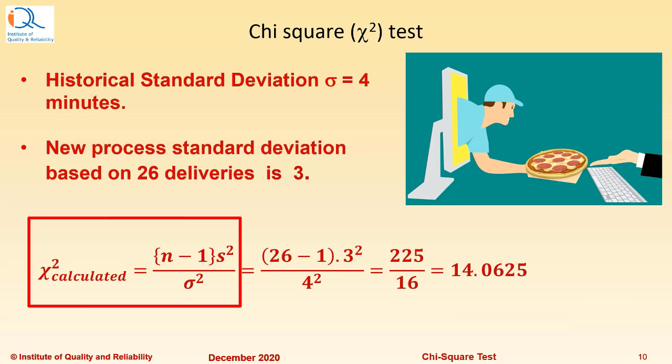So, Chi-Square calculated will be (N-1)S²/σ². That is equal to (26-1) × 3²/4² which can be calculated as 14.0625.